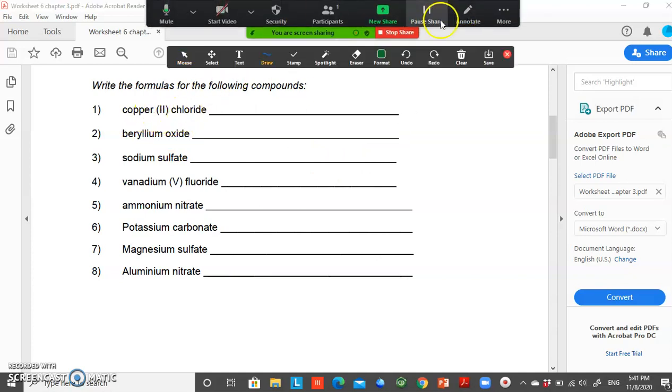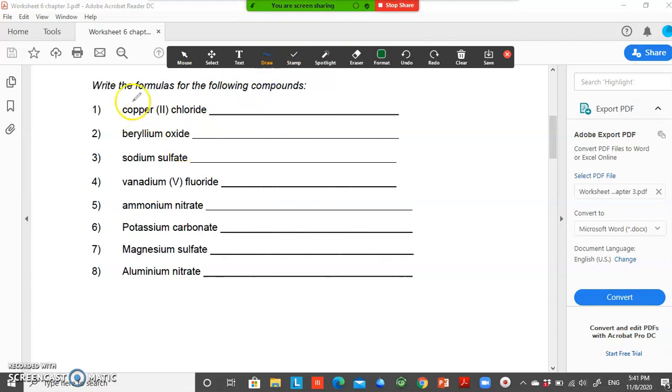What is the ionic formula for copper 2? Copper 2 is a transition metal, so the bracket tells you the number of positive charges copper has. So copper will have Cu2+. And then chloride, the formula for chloride is Cl-.